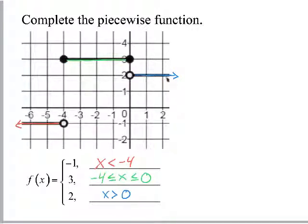And lastly, this blue graph right here is a graph of 2, and it's right of 0 or greater than 0, and it's open circle. So, that would be just a greater than.